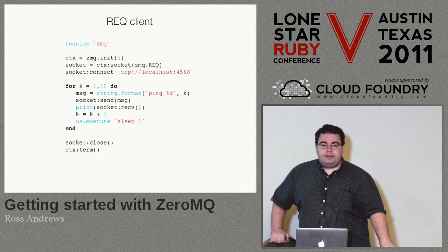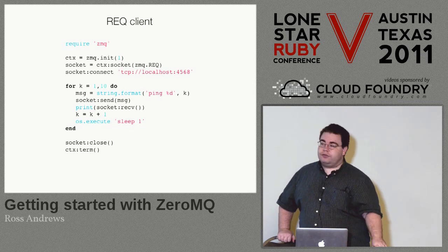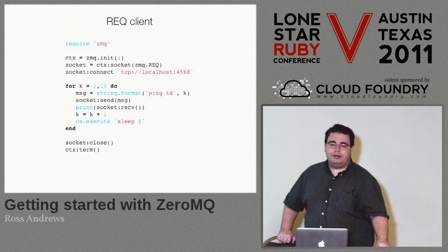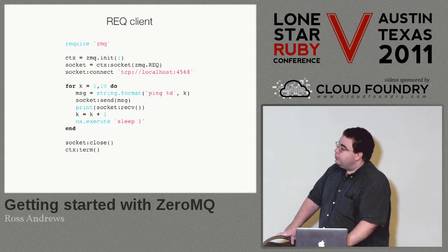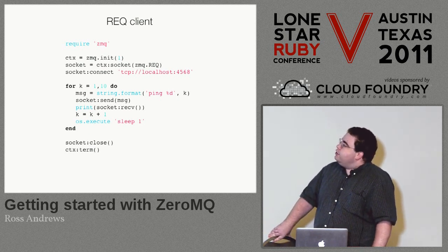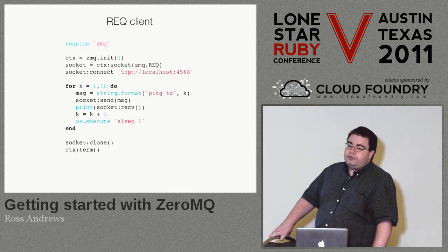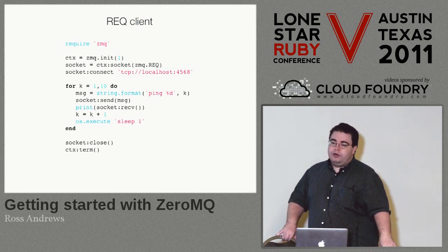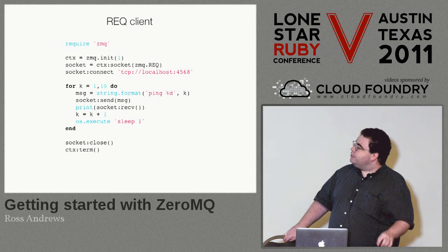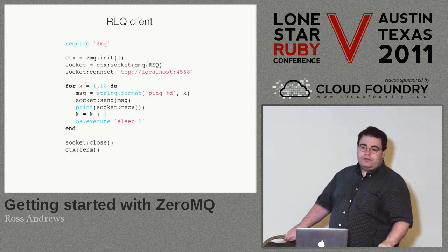This is the client to make requests and get responses — and you'll probably notice this is not written in Ruby. I couldn't get the ZeroMQ gem to build on this laptop, so I'm going to do the demo in a different language. The first thing we do is load up the ZMQ library with ZMQ init, then make a new socket of type request. We connect to localhost port 4568, and then ten times we send a message — a ping and a number — and then sleep for one second.